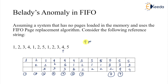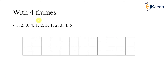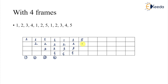So with three frames, a total of nine page faults occurred. Now let me allocate one more frame — four frames. With the same reference string: 1, 2, 3, 4 each cause page faults one through four. Then 1 comes — hit, no change. Then 2 comes — hit, no change: still 1, 2, 3, 4. Then 5 comes — 1 came first, so 1 is replaced: 5, 2, 3, 4 — page fault five. Then 1 comes, replacing 2: 5, 1, 3, 4 — page fault six.